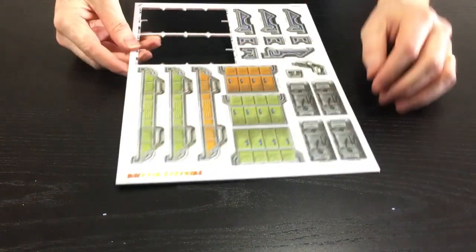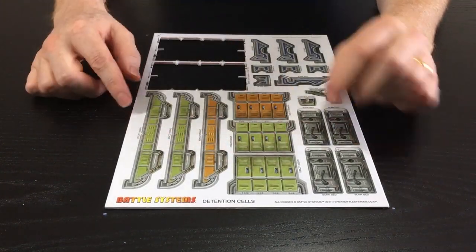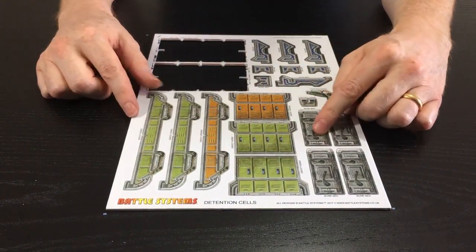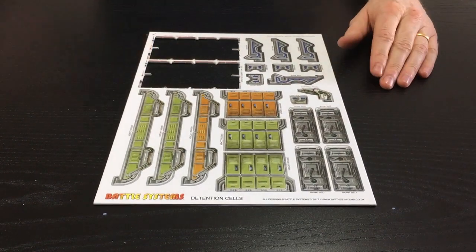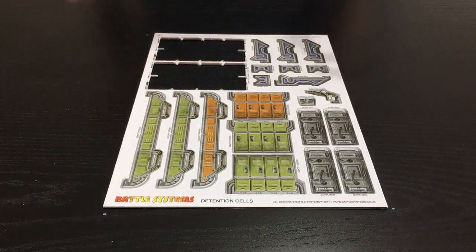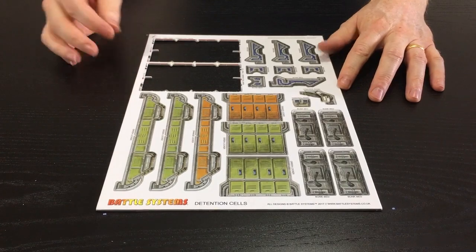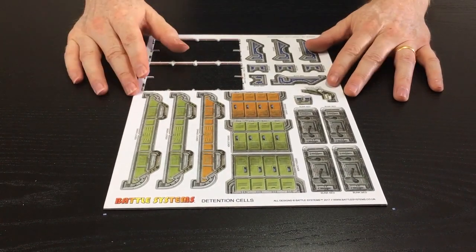And like I say, everything else on this sheet you've seen before - lockers just a different color, you've got some beds and some other bits and pieces as well. So there you go, nice and simple but incredibly effective, really good for scenarios. The detention cells.